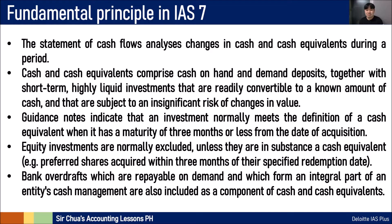Equity investments are normally excluded unless they are in substance, rather than in form, a cash equivalent — so we apply substance over form here. Bank overdrafts which are repayable on demand and which form an integral part of an entity's cash management are also included as a component of cash and cash equivalents. The detailed discussion of what is included as cash and cash equivalent is covered in intermediate accounting.